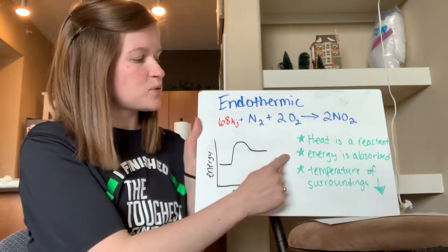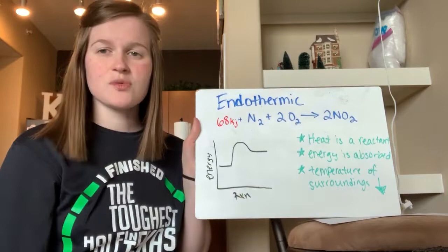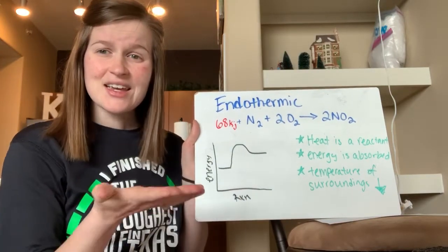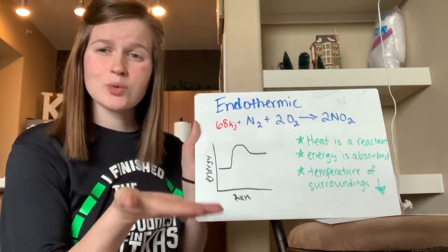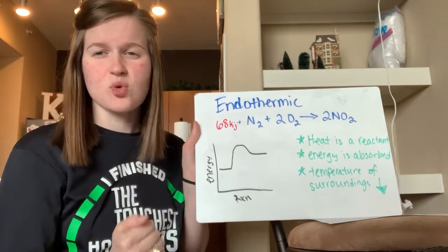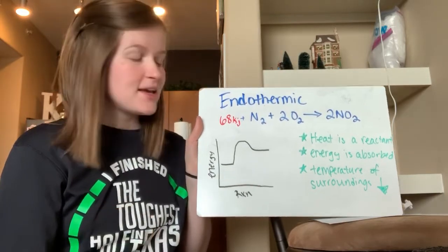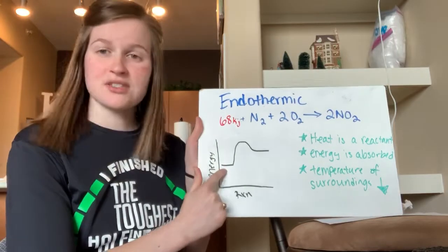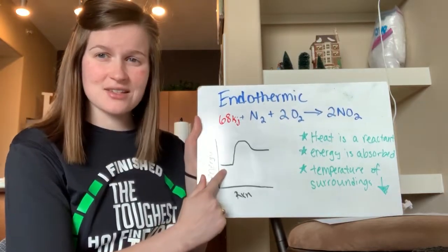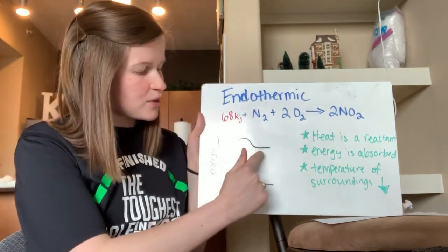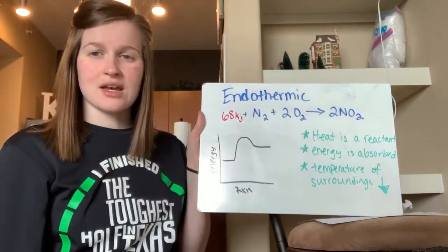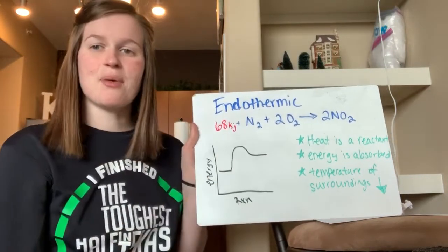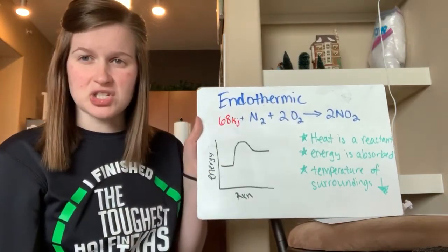Energy is absorbed, and the temperature of your surroundings is going to go down. My hand is going to get colder as I hold that ice and it absorbs the heat from my hand. Here's the energy diagram: your reactants on the left are going to have less energy than your products. Your products come out with more energy. There is a positive energy change.